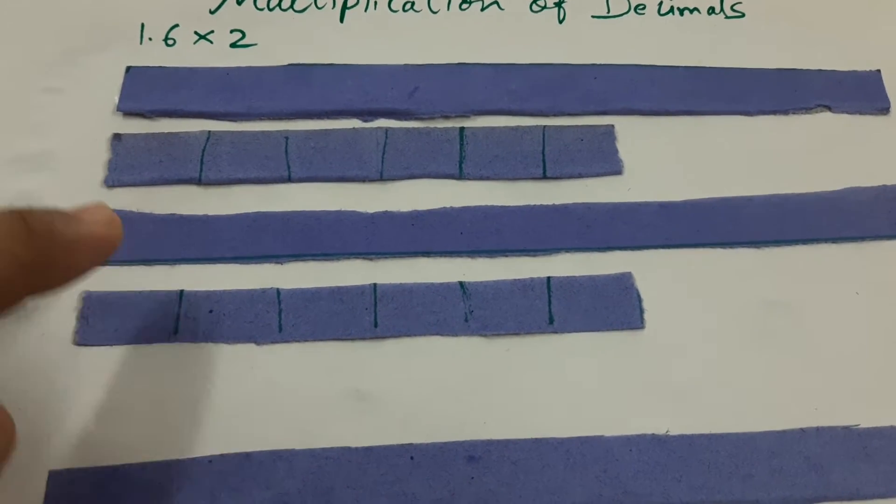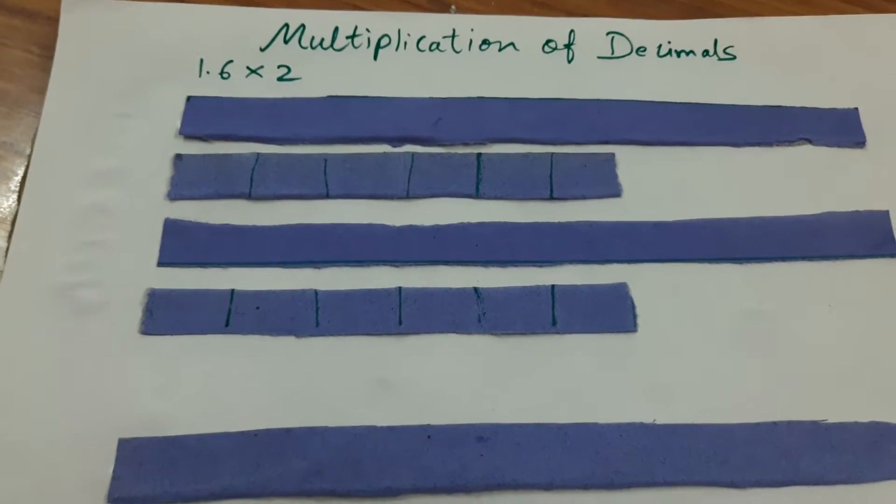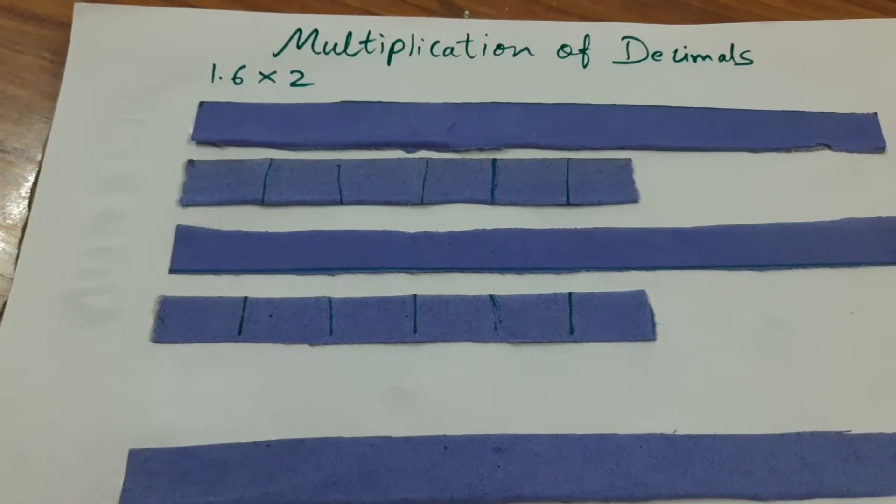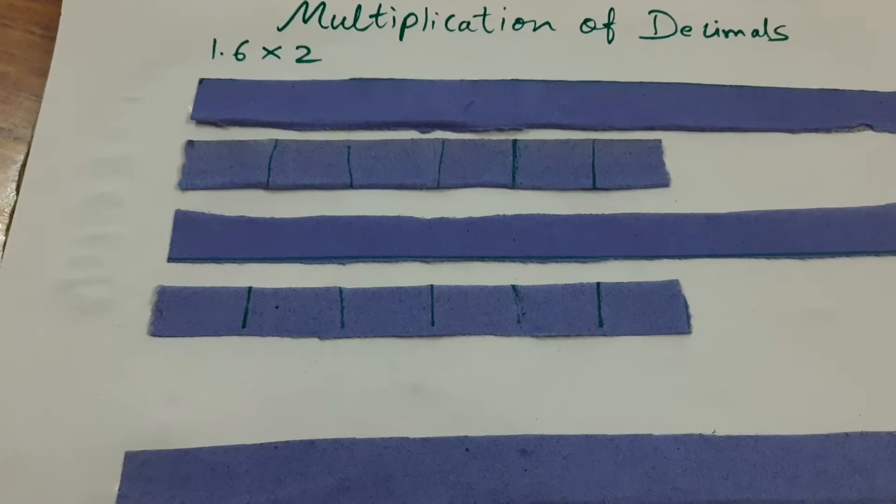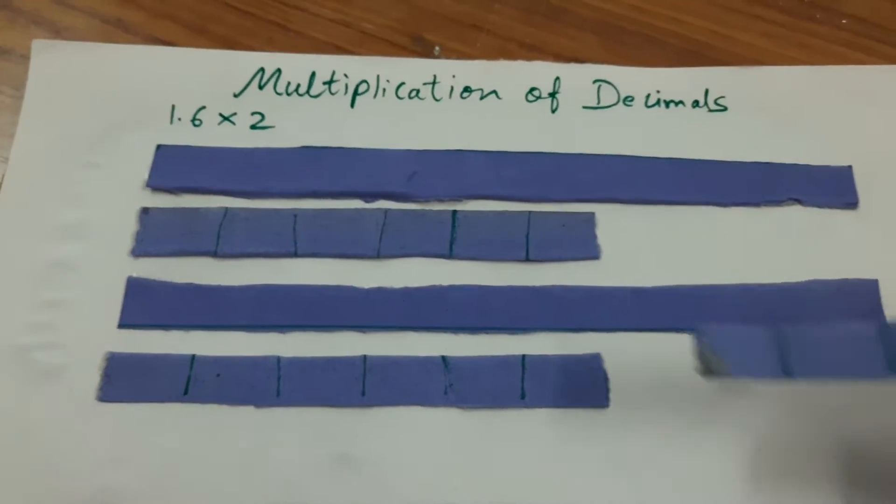This 0.6, and from here suppose if I have a strip of 0.6, from that 0.6 I can take 0.4 can come here.